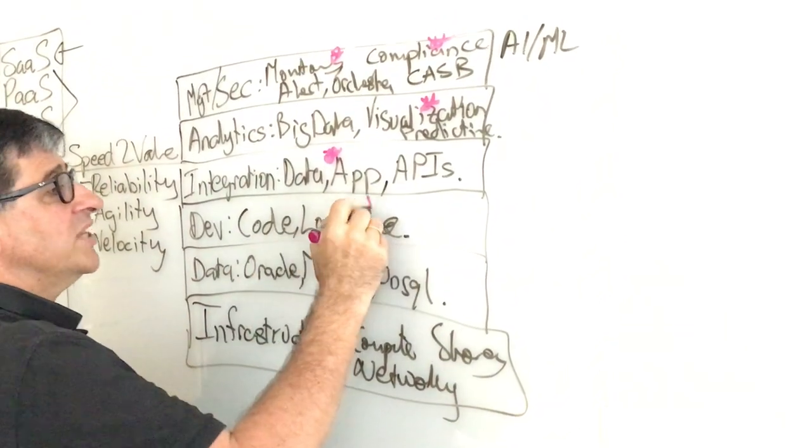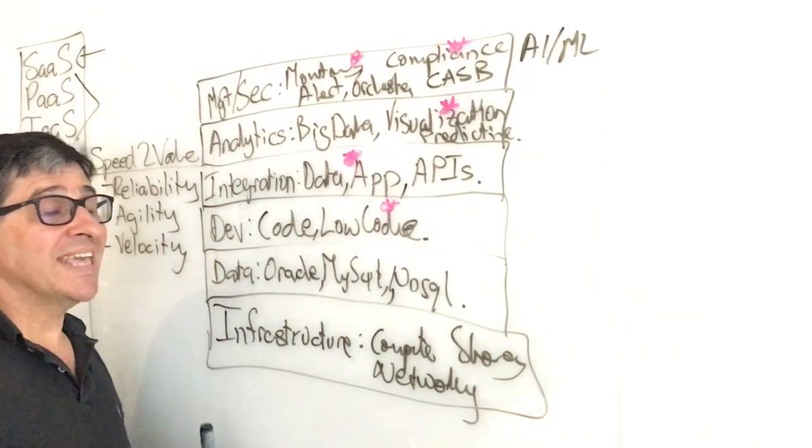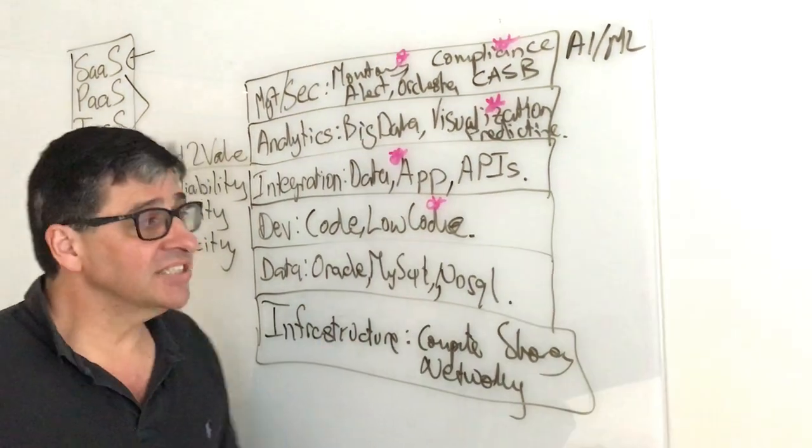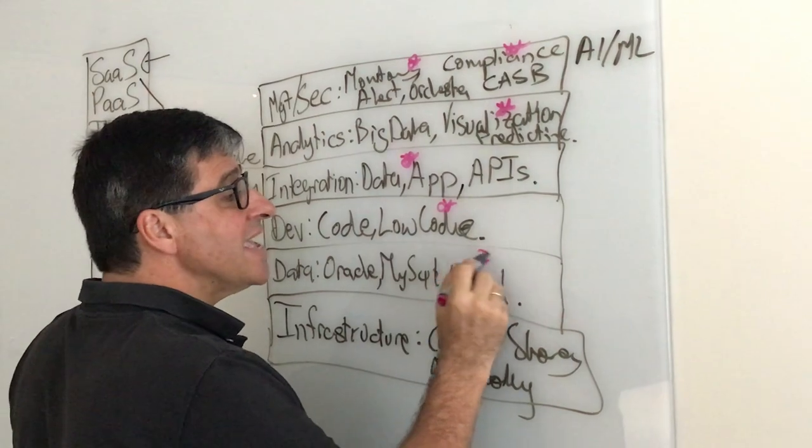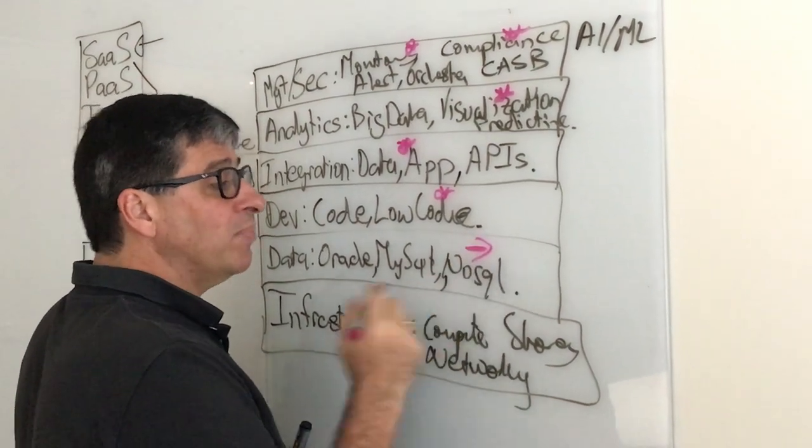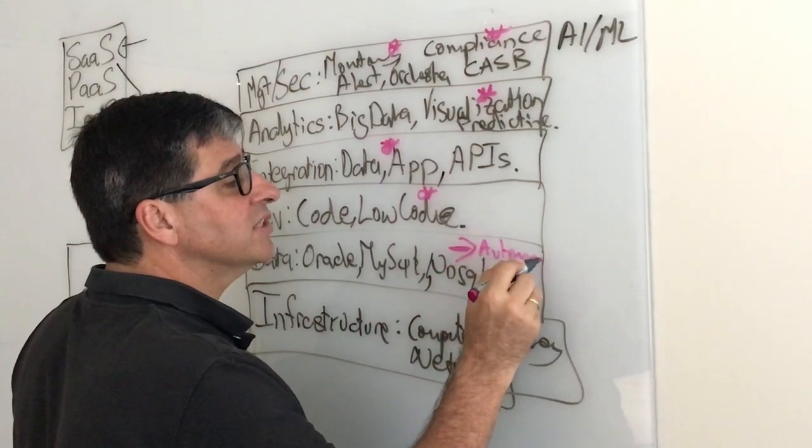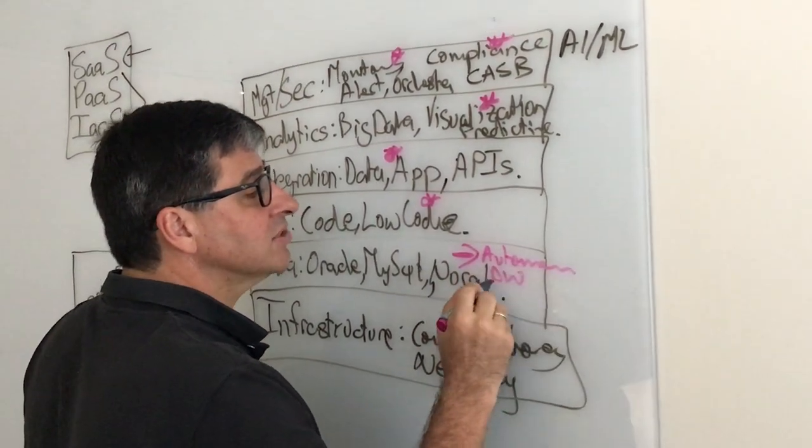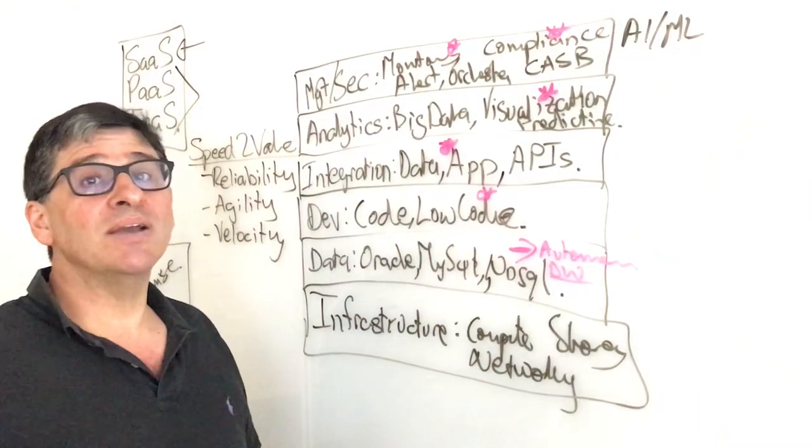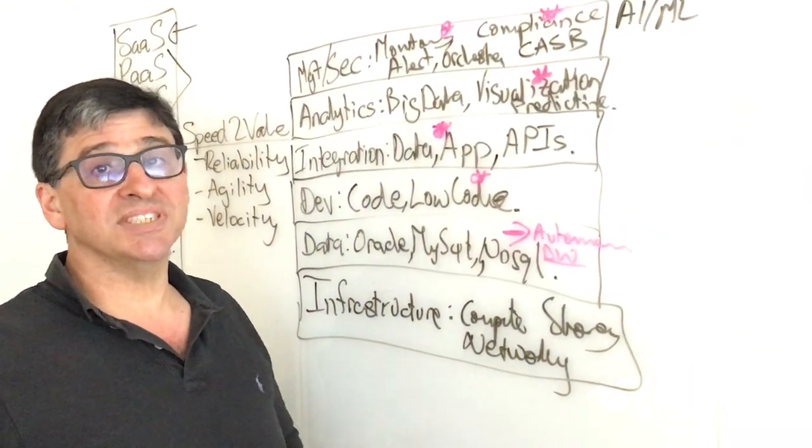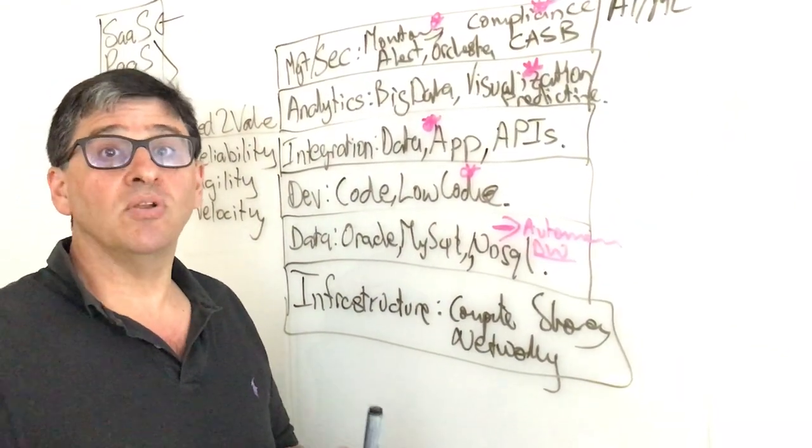The area that's probably the most exciting is actually in data. We've got a couple of capabilities here, one of which I'll spend a bit of time talking about: the autonomous data warehouse.